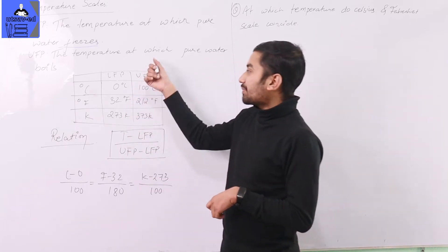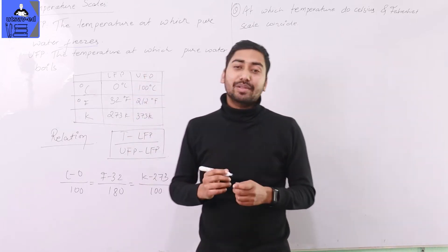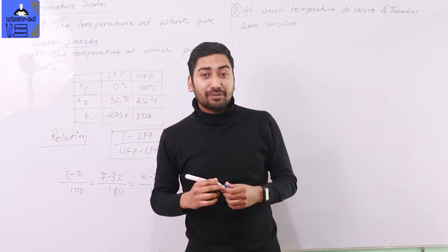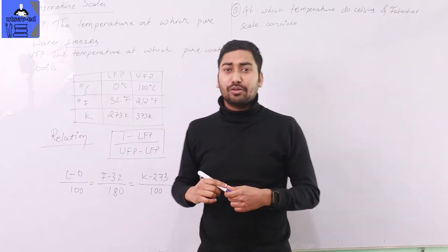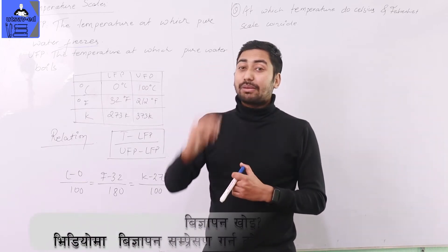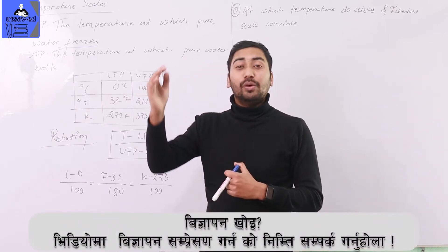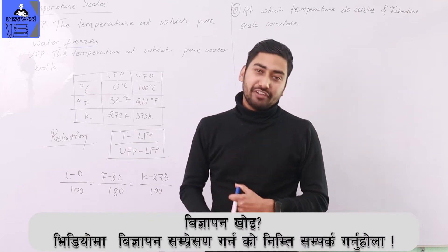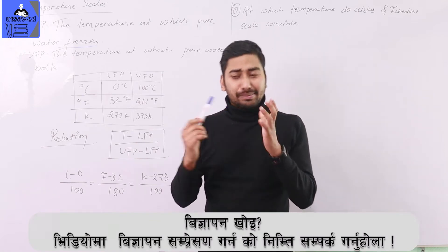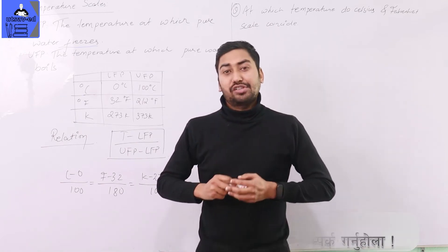The upper fixed point is the temperature at which pure water boils, at one atmosphere pressure. These two points — the lower and upper fixed points — define a specific scale.